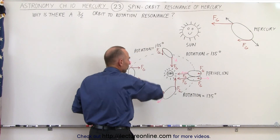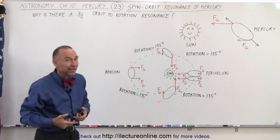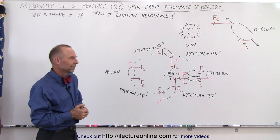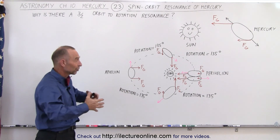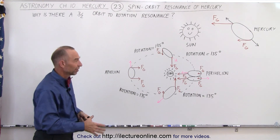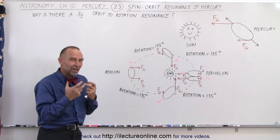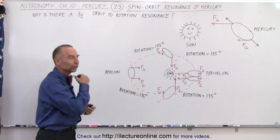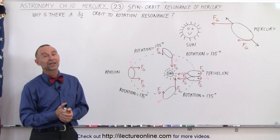So for one trip around the Sun, Mercury rotates exactly one and a half times, and it will keep doing that as long as Mercury and the Sun exist — about another five billion years, until the Sun becomes a red giant and swallows Mercury. But for the next five billion years, Mercury will remain locked in that 3-to-2 rotational and orbital resonance, and that's the way it's going to be for a long time to come.